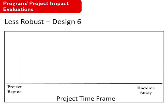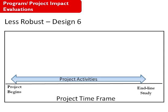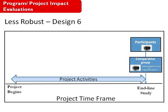Design 6 is also a less rigorous impact evaluation design. The project begins, and there is no baseline study conducted — the project activities just get started. Then at the end of the project, a study is conducted among two groups: the participants and then some type of comparative group.